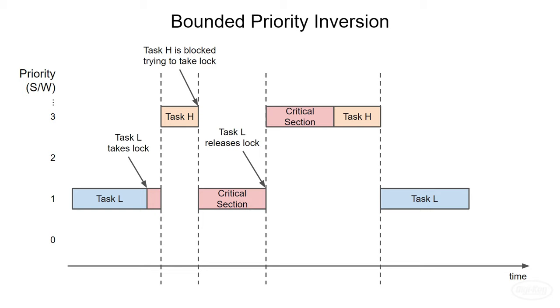Note that this is an inherent issue with using critical sections. The only way to prevent bounded priority inversion is to not use critical sections or mutexes at all, or use a multi-core processor. If you do have to use them, your best bet is to keep the critical sections as short as possible to mitigate the effects of bounded priority inversion.